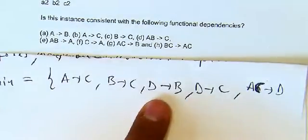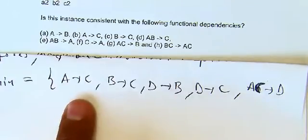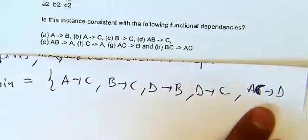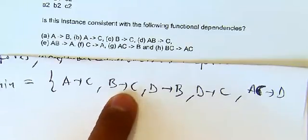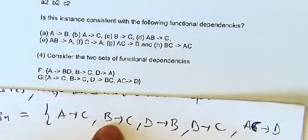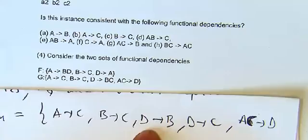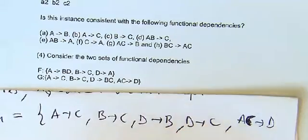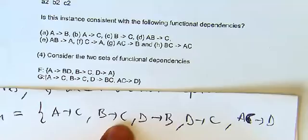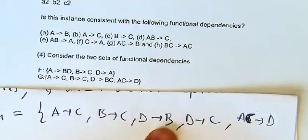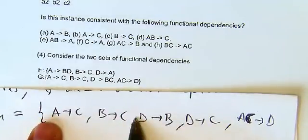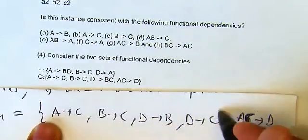Now we look for redundancy. We can see that D→B and B→C together imply D→C, so D→C is redundant and can be removed.